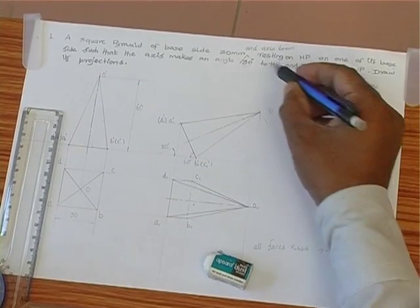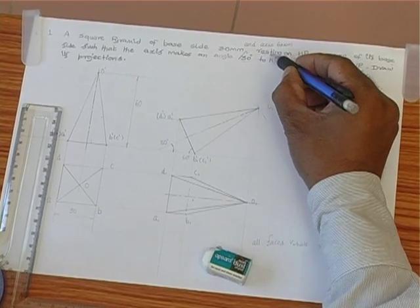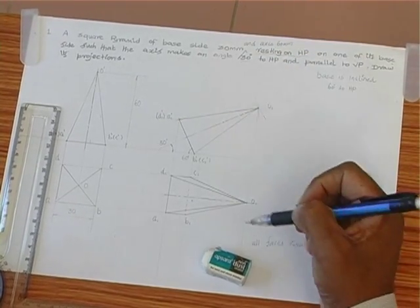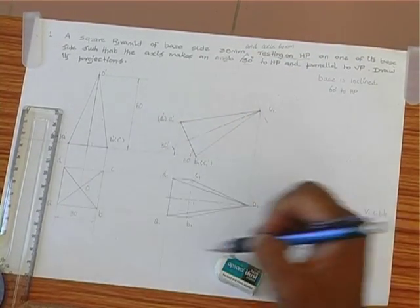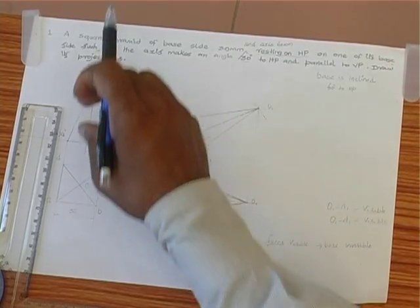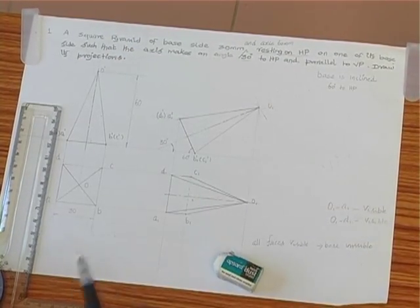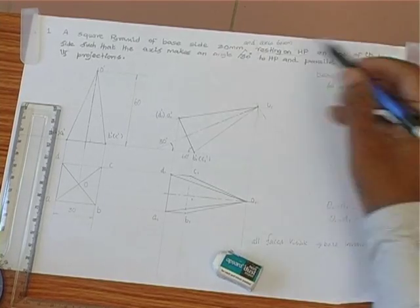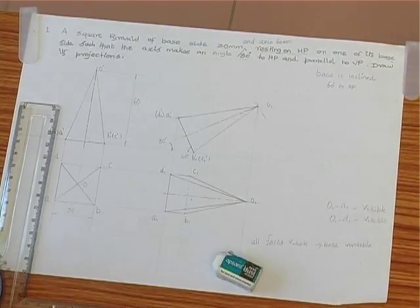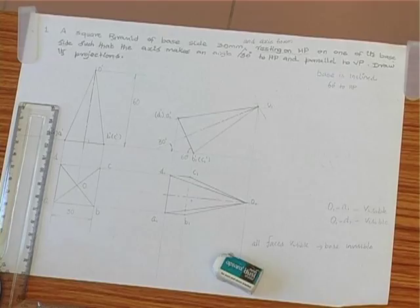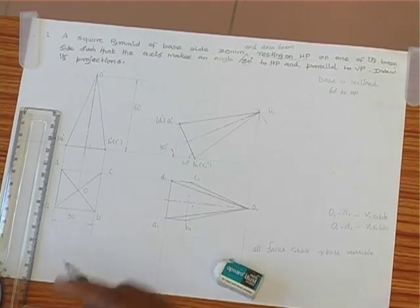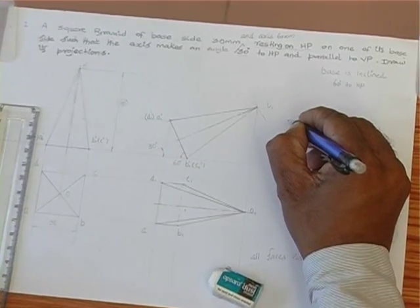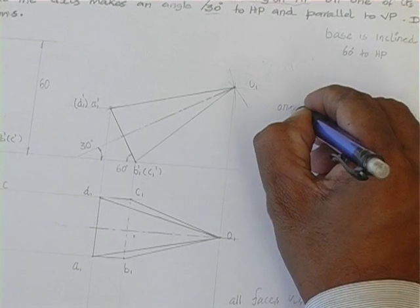Here it is resting on HP, so therefore we have drawn the top view first. If it is resting on VP, this has to be drawn in the front view on one of its base side. So therefore this is a side position, inside position.